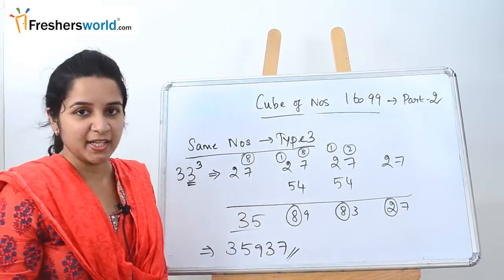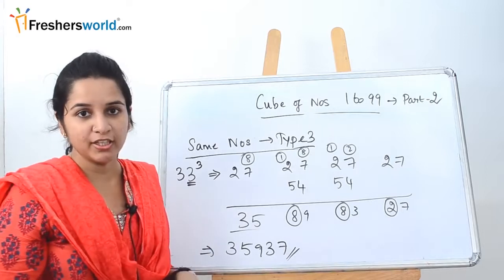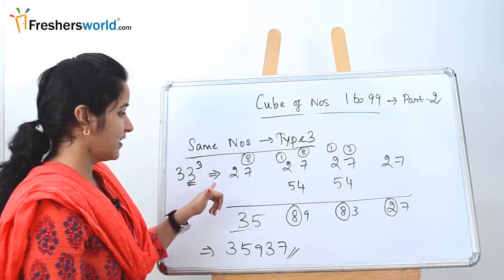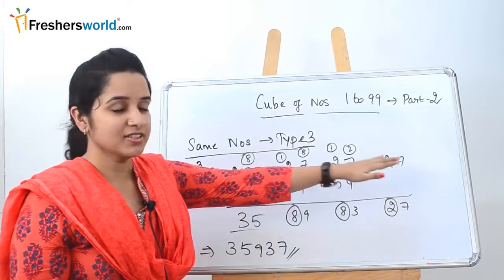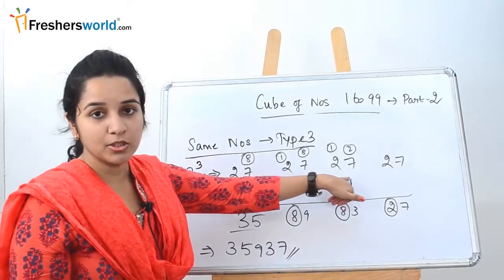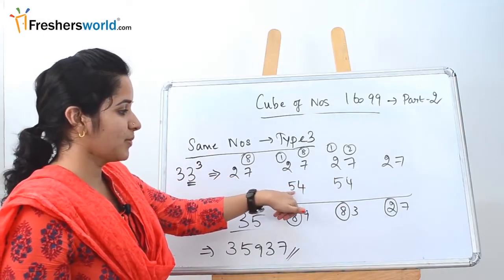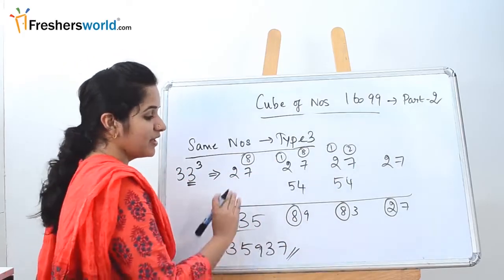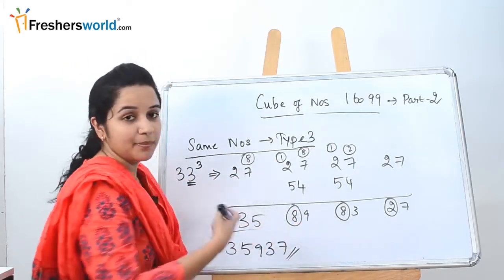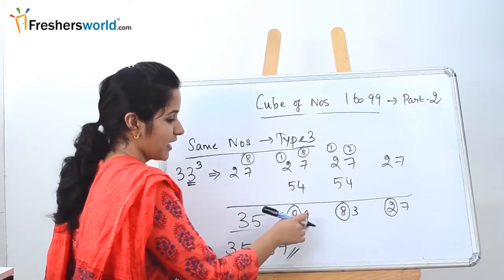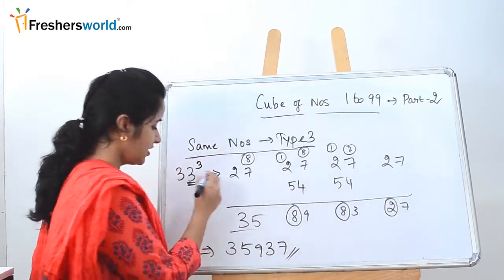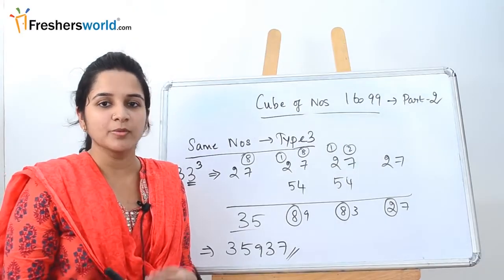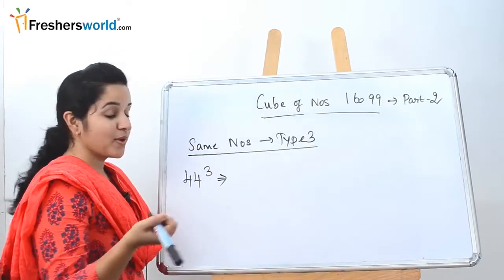To summarize Type 3: find the cube of the single digit — here 3 cubed = 27. Write it across all four slots, then multiply the middle two by 2 to get 54, 54. Add with carry-overs from right to left. The digits not in brackets form the answer: 35, 9, 3, 7 — so 33 cubed is 35937.